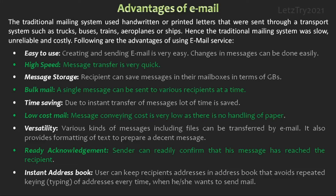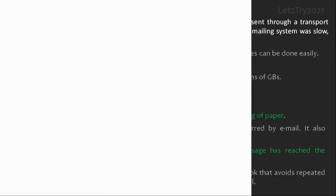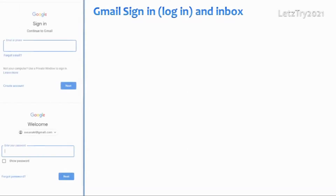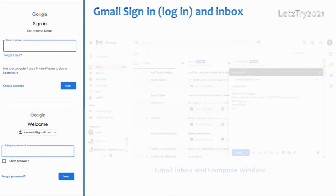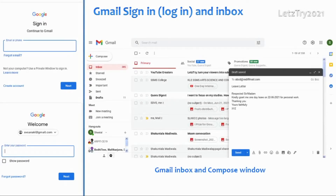Ready acknowledgement — the sender can readily confirm that his message has reached the recipient. Instant address book — the user can keep recipients' addresses in an address book, which avoids repeated typing of addresses every time when he or she wants to send an email. This page shows the Gmail sign-in area, inbox to read messages, and compose window to write a letter.